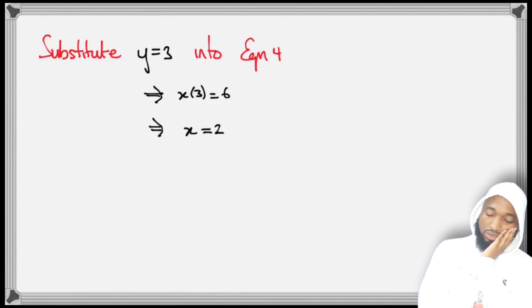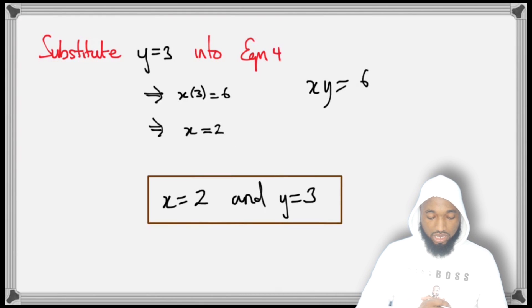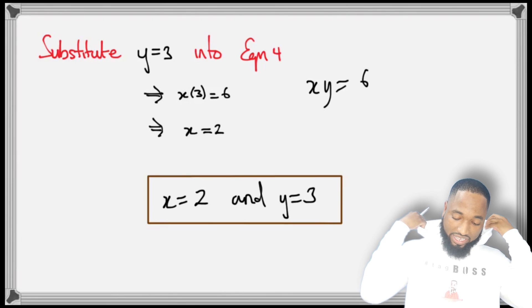Substitute this 3 back into Equation 4 because Equation 4 is an easy equation. If you remember, Equation 4 was xy equals 6. We already found y, so substitute there and we'll be able to figure out x. x equals 2 and y equals 3.